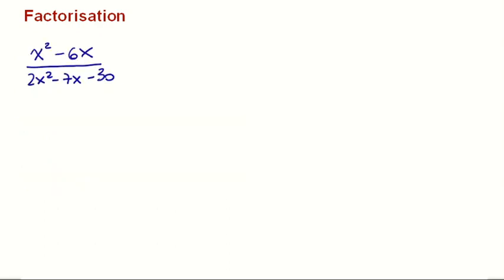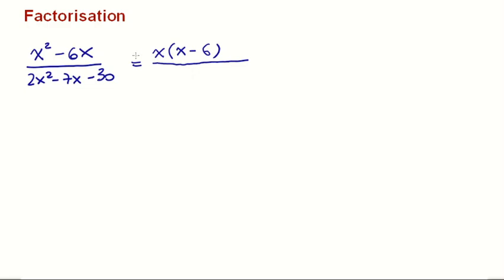Let's go to the next problem — we have a fraction again with two quadratics. Again, what you have to do is factorize on top and below and then simplify anything you can. Up top, x squared minus 6x — that's simple: x times x minus 6. I'm going a bit quick here because you can pause, go back, and if you don't understand anything you can drop me an email.